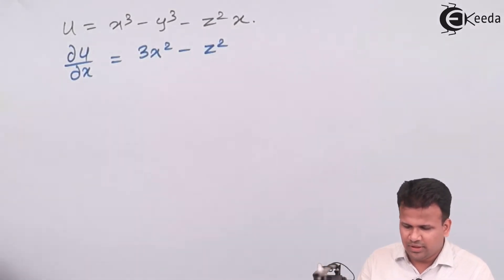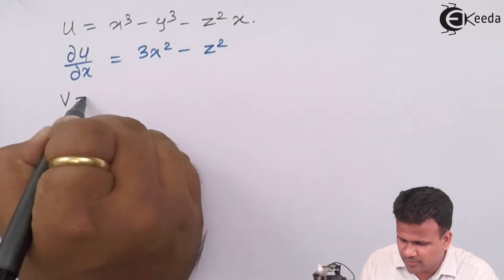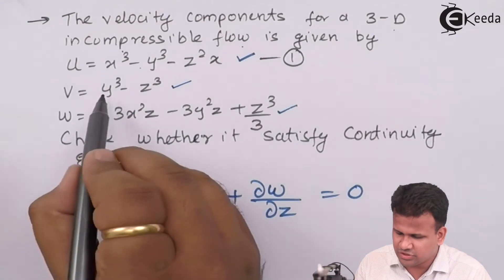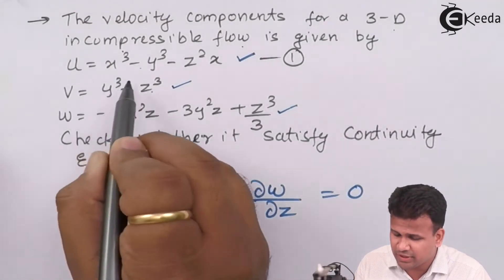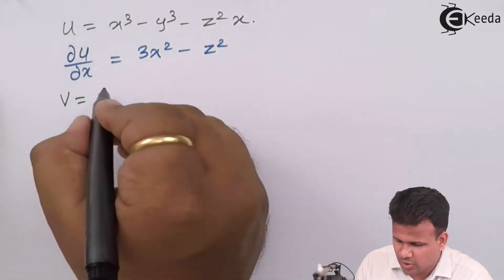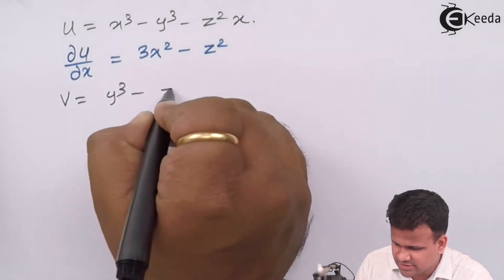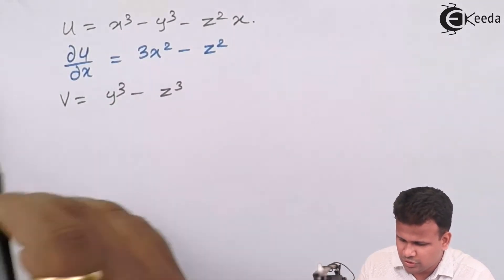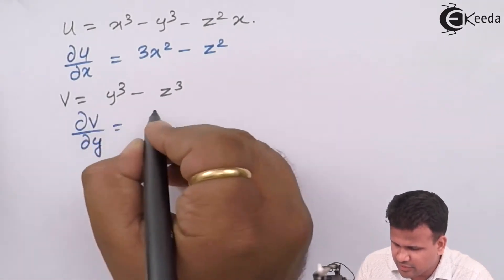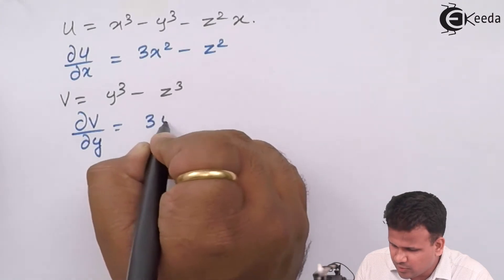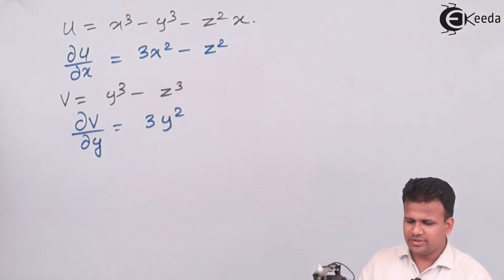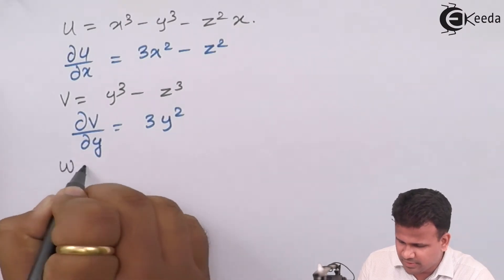Similarly, the value of v from the problem is v = y³ − z³, which is a function of y and z. Differentiating with respect to y gives ∂v/∂y = 3y² − 0 = 3y².